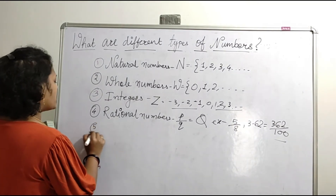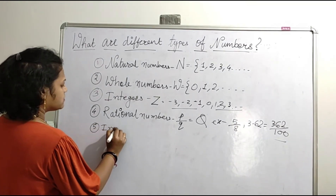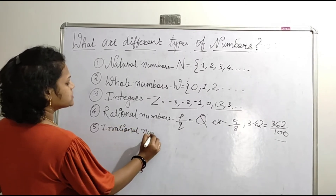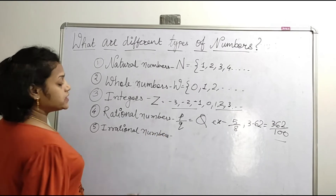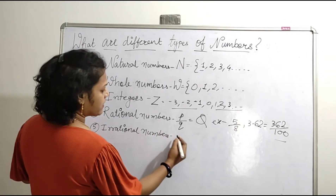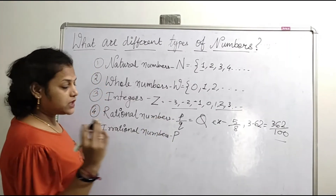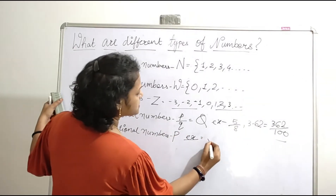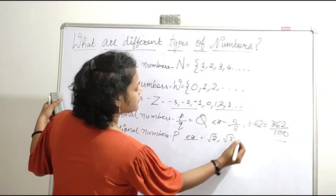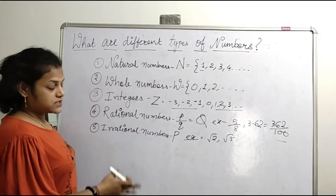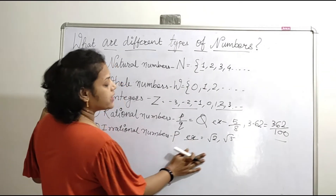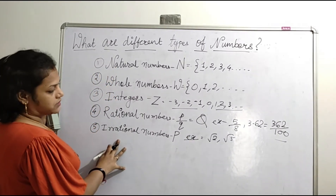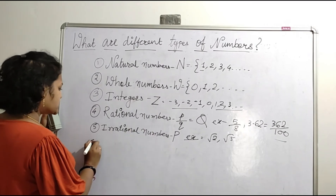Next, we will see about irrational numbers. Irrational numbers are those which cannot be written in the form of p by q. Irrational numbers are denoted by capital P. Examples include root 2 and root 5 — these are irrational numbers because you can't write them in ratio form.